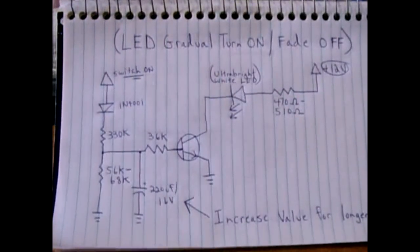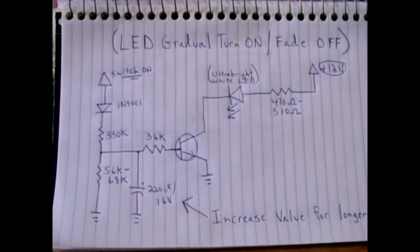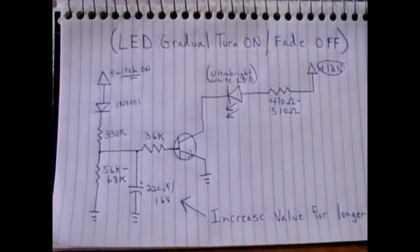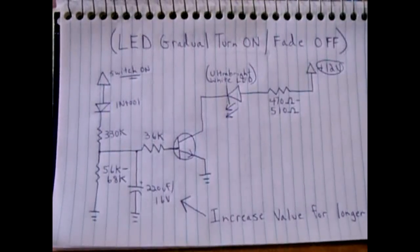This circuit can also be used with small incandescent bulbs such as a dome light in your car, this way the light can go on gradually and turn off gradually.